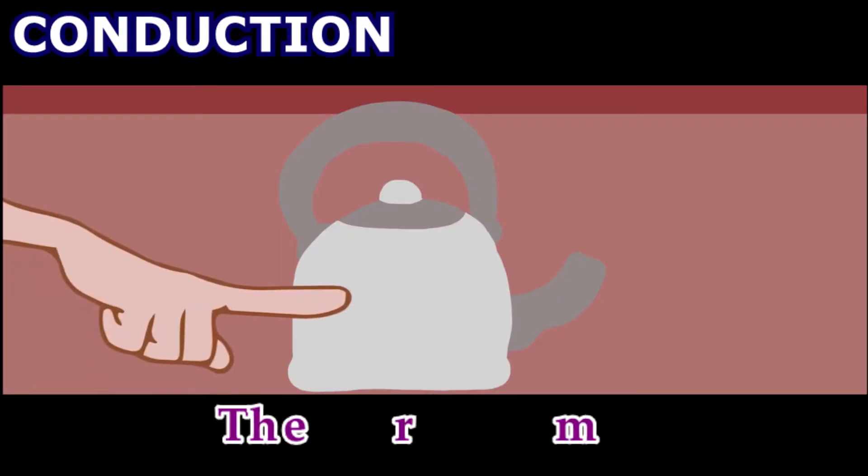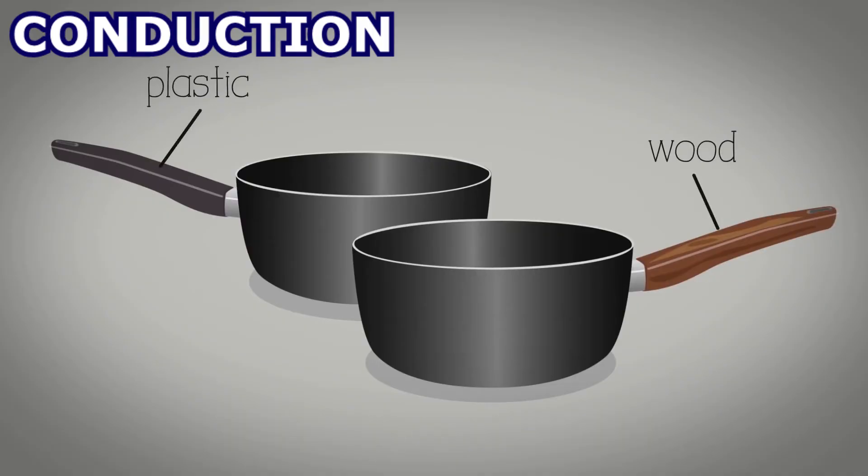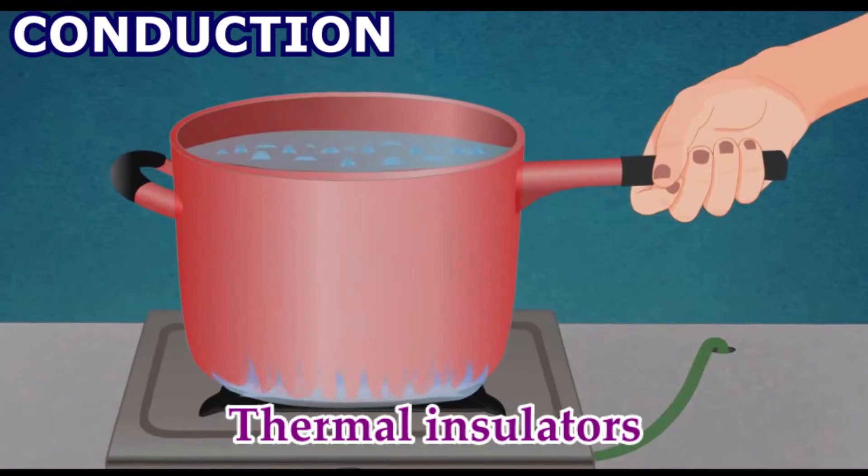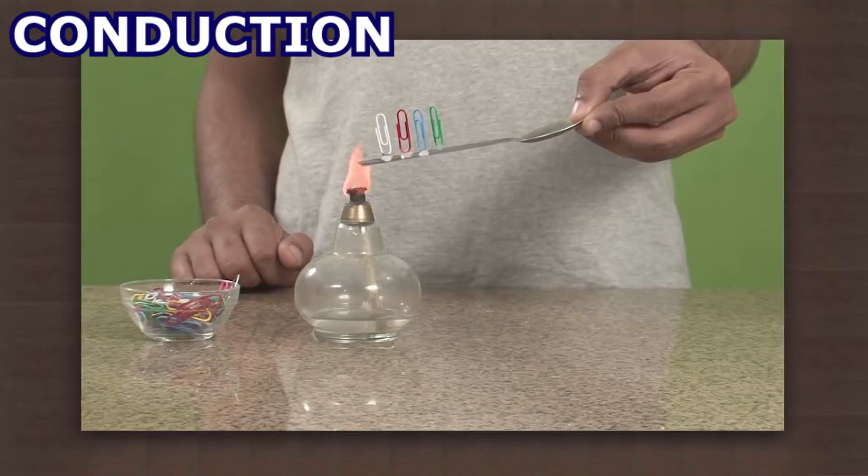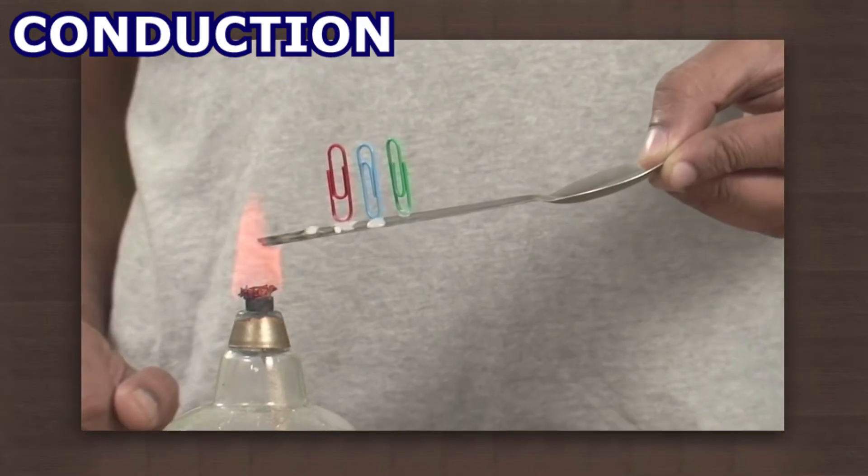Metals are very good thermal conductors. However, other materials, such as wood, are thermal insulators because they do not conduct heat easily. This experiment shows how heat travels through the spoon, melting the wax and making the clips fall.